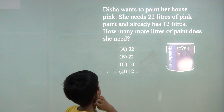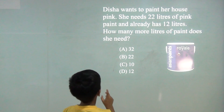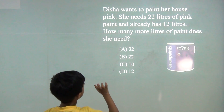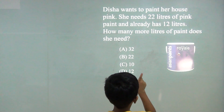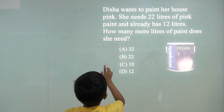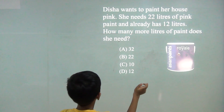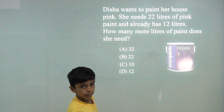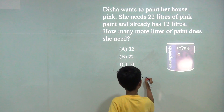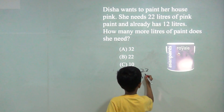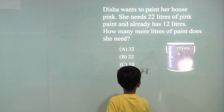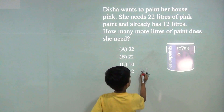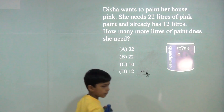Disha wants to paint her house pink. She needs 22 liters of pink paint and already has 12 liters. How many more liters of paint does she need? So we will do 22 minus 12. 2 minus 2 is 0, 2 minus 1 is 1. So the answer would be 10.